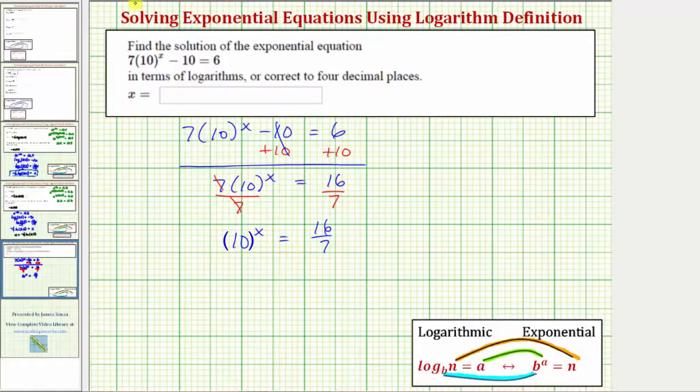So let's write the equivalent log equation. We know we'll have a logarithm. Because we have an equation, we'll have an equal sign. And now we'll identify the three parts of the equation.